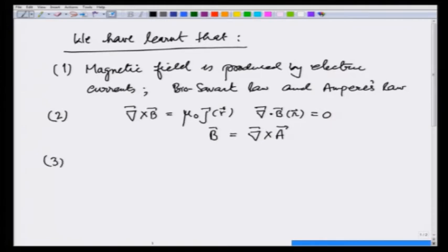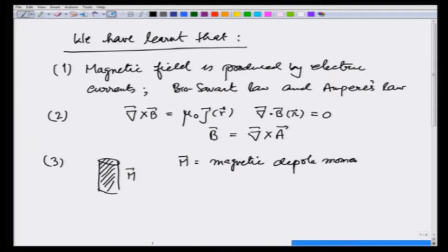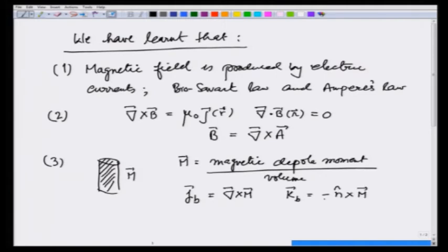Third, we learnt when I take a magnetic dipole or a magnetized medium with magnetization M, where M is the magnetic dipole moment per unit volume, this is equivalent to a bound current J_B which is curl of M and a surface current K_bound which is minus n cross M. We solved certain examples using these.